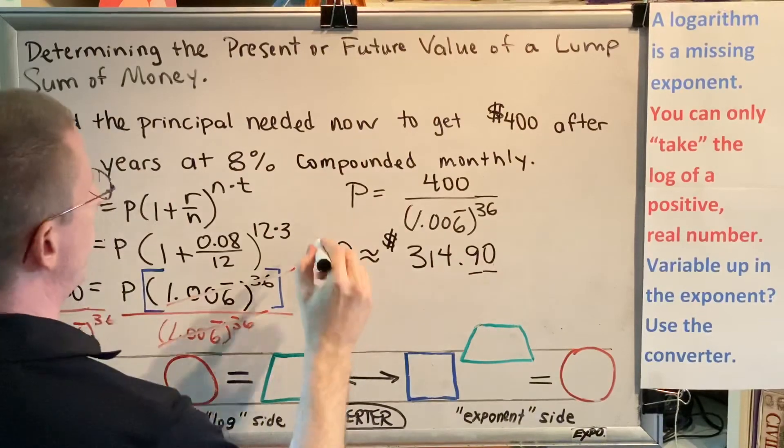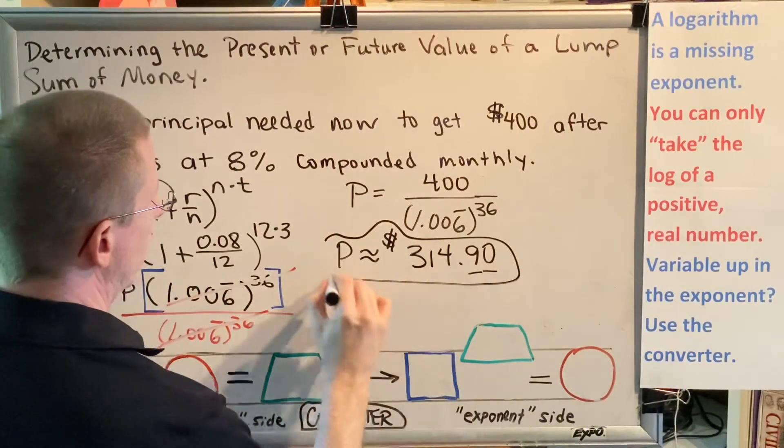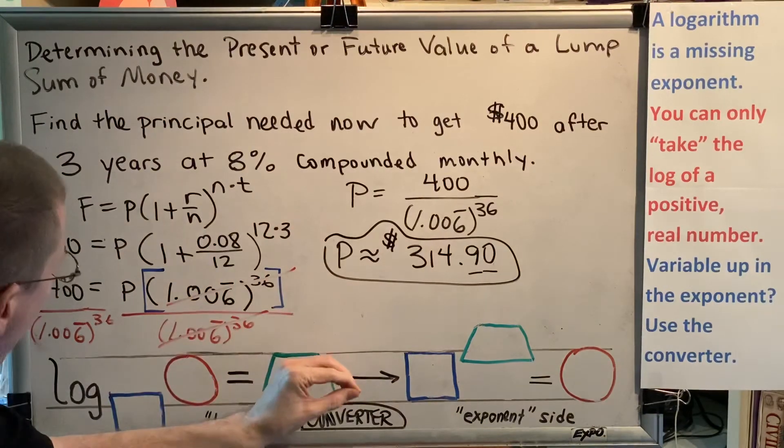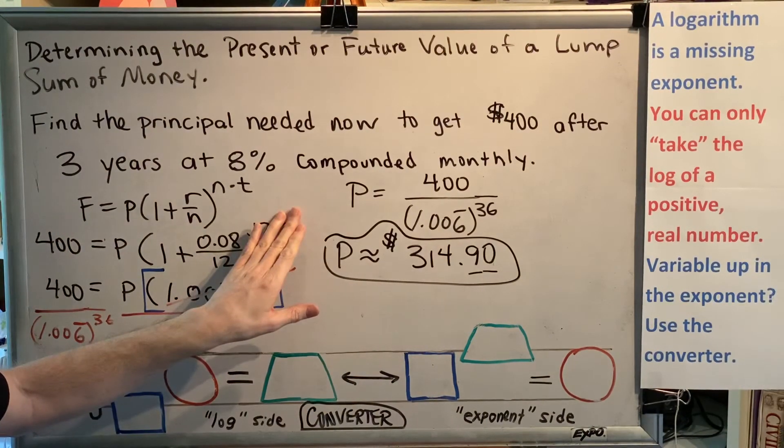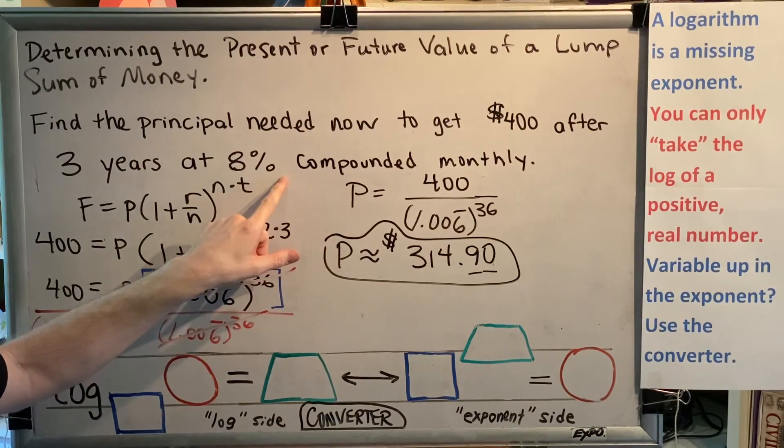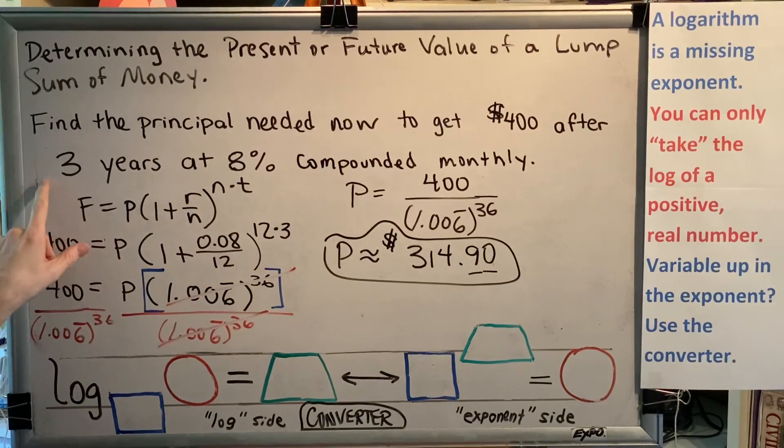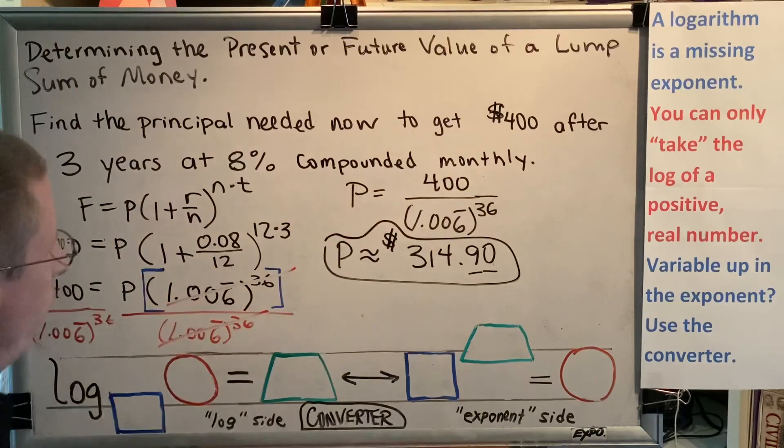So the answer to the question is, I need $314.90 today so that I can invest it in an account, yielding 8% compounded monthly, and come back three years later to find that my account is now worth $400.